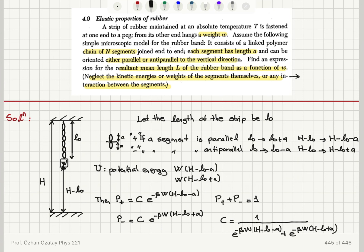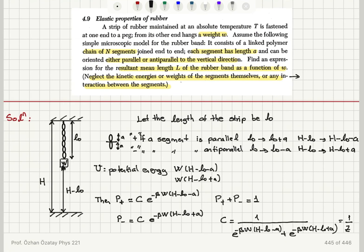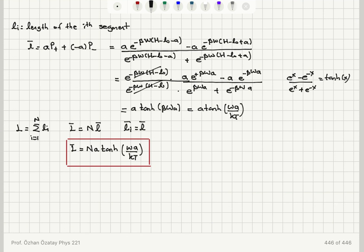The total probability is normalized to one, giving c equal to one over the partition function. The mean length per segment is computed from the two possibilities (plus a or minus a), weighted by their Boltzmann probabilities, yielding a times tanh(Wa over kT). For the total mean length of the rubber band, I sum contributions from all N segments, and since each has the same mean, the final answer is N times a times tanh(Wa over kT).